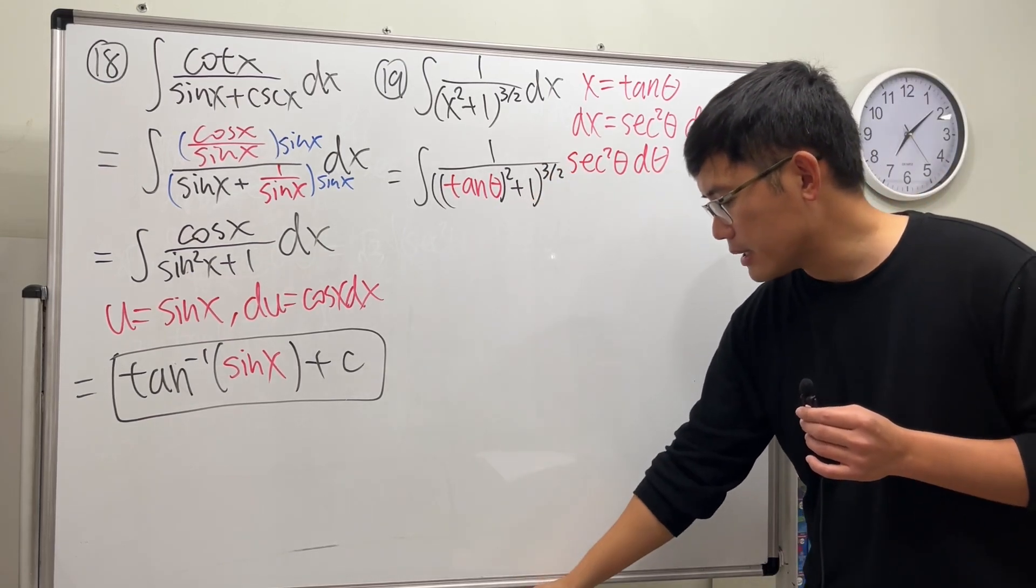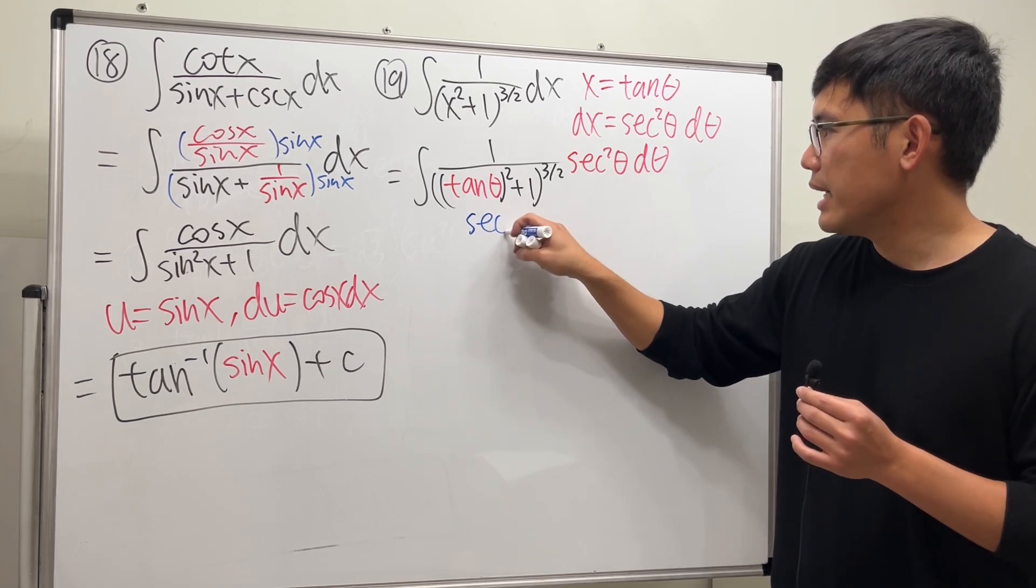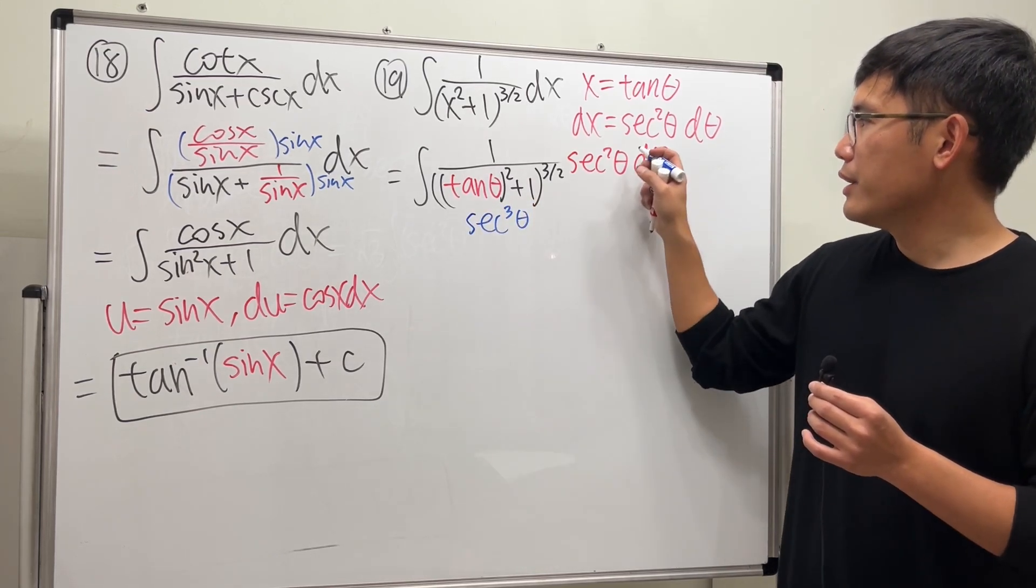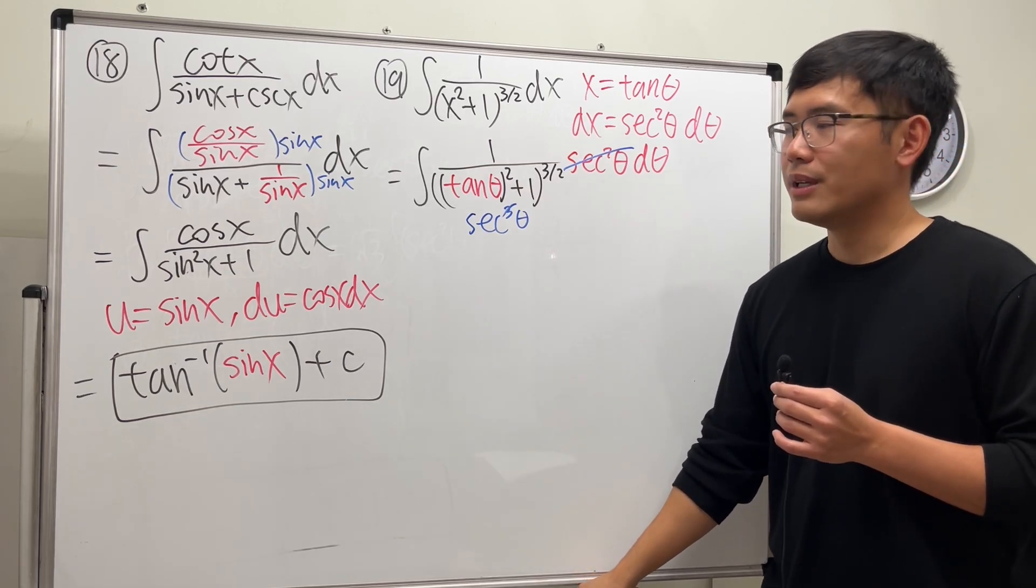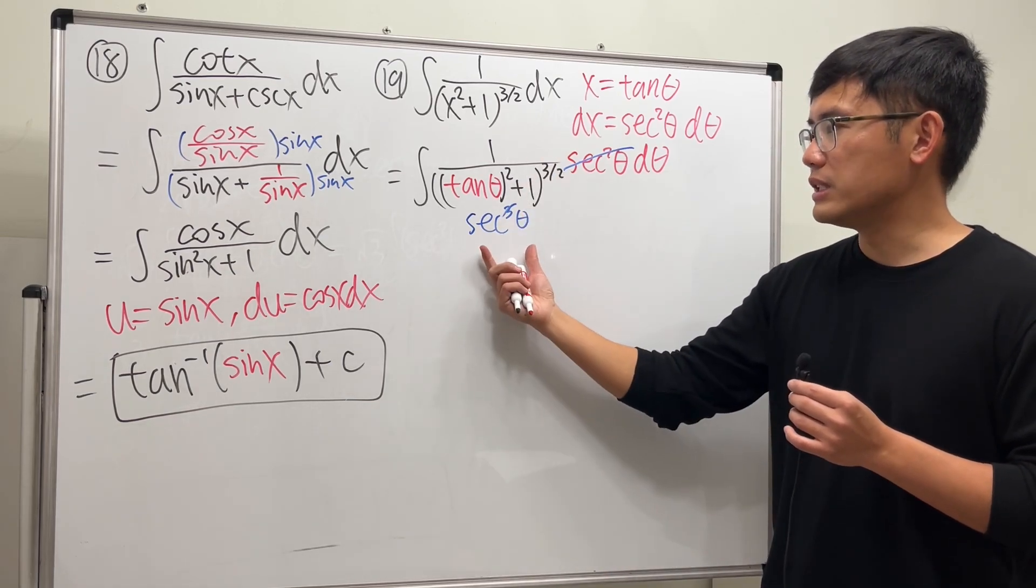So on the bottom we actually just get secant to the third power theta. And of course you can cancel the two of them out, so we're just going to get 1 over secant theta.